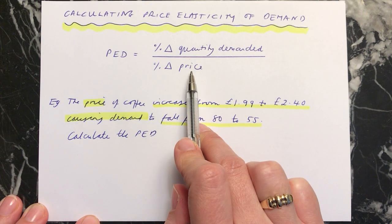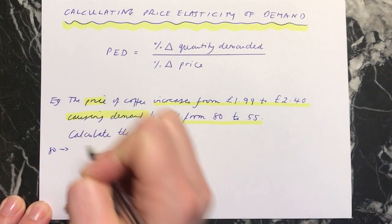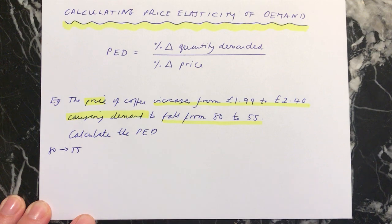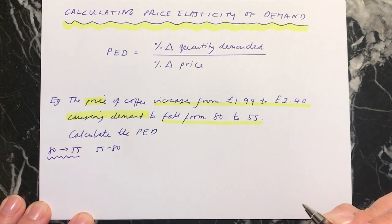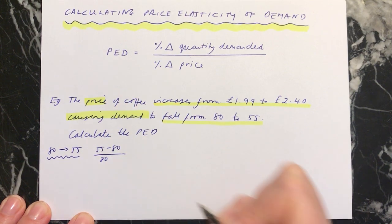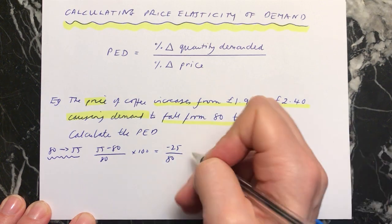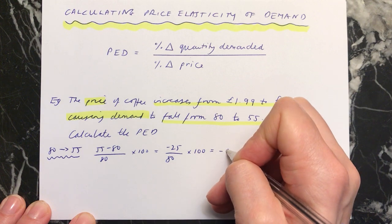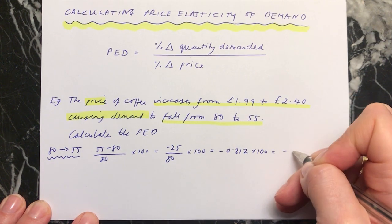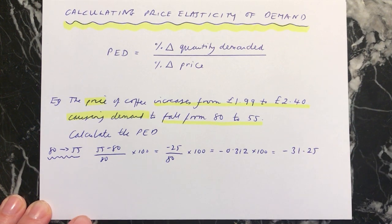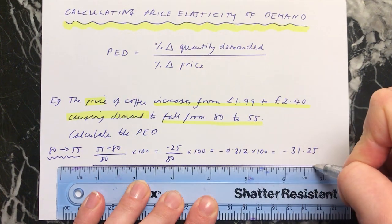We need to think about the top line and then the bottom line, going through it methodically, bit by bit. For the top line, we've gone from 80 units quantity demanded to 55. We need to work out the percentage change. The calculation is: (55 − 80) ÷ 80 × 100. That is −25 over 80 times 100, which equals −0.3125 × 100, which equals −31.25. So that's the answer for the top line.